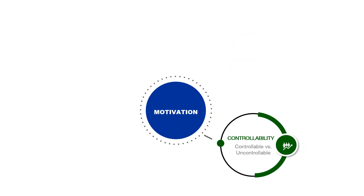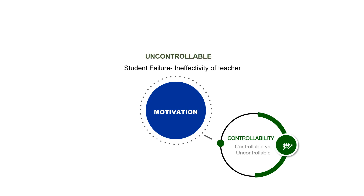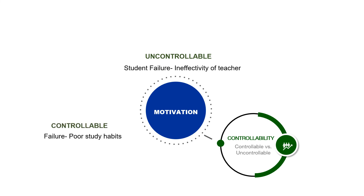The last one is controllability — controllable or uncontrollable. The student believes that the reason why he failed is because his teacher did not know how to teach or failed to give the right strategy. This is something that the student cannot control. However, if he admits that his failure is caused by his poor study habits, then this is definitely something within his control.